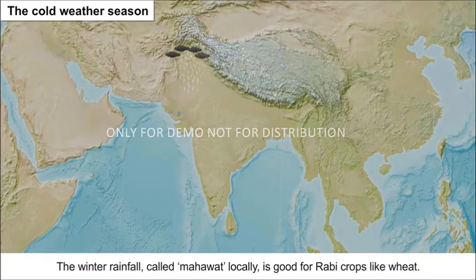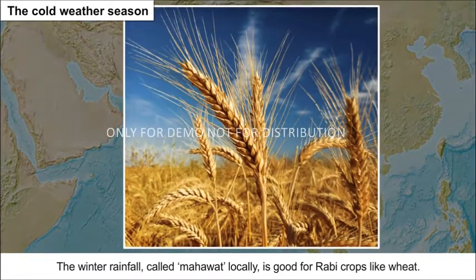The winter rainfall, called Mahavath locally, is good for Rabi crops like wheat.